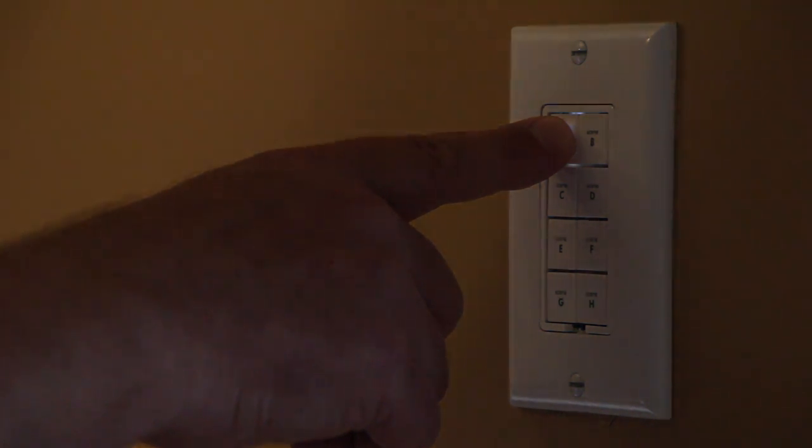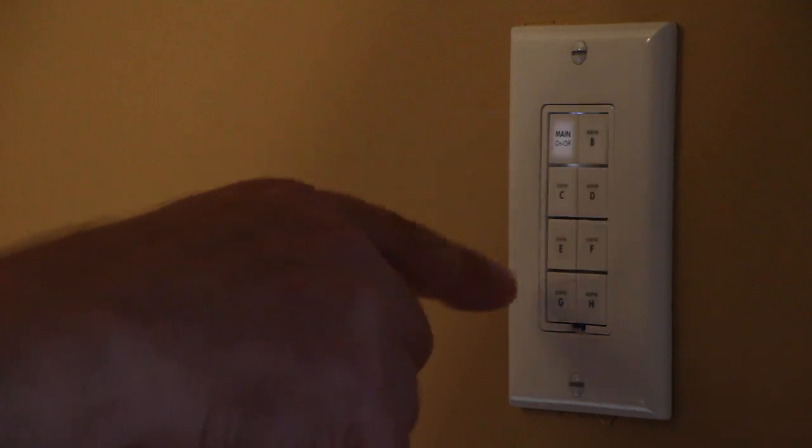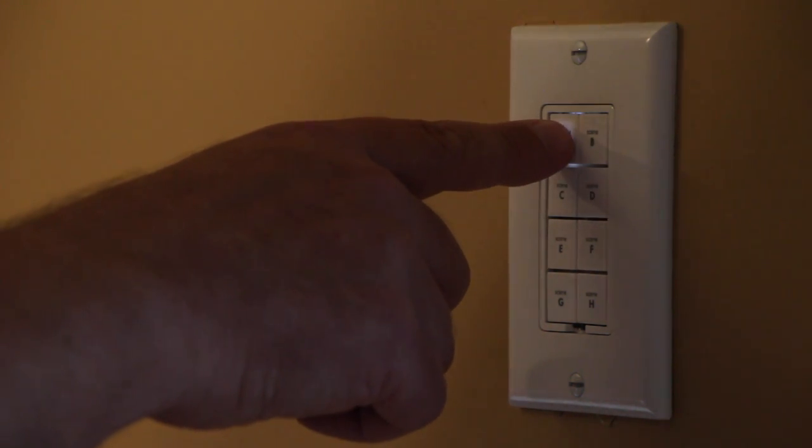Press and hold the button to change the brightness of the light. First it gets dim, then the second time it gets bright, and so on.